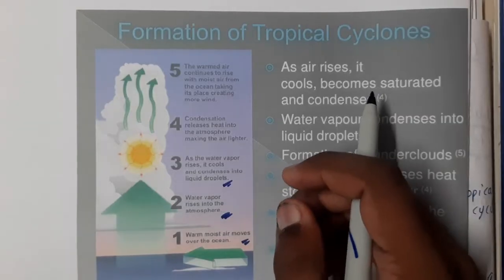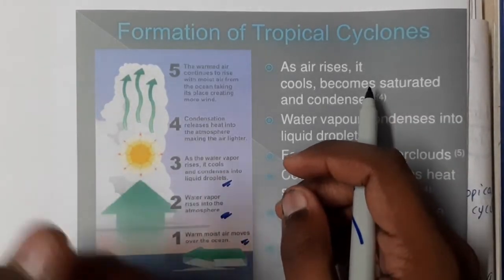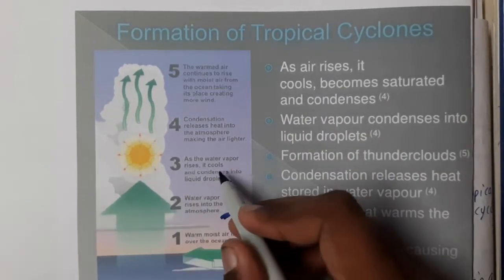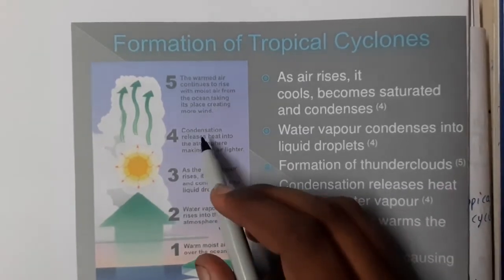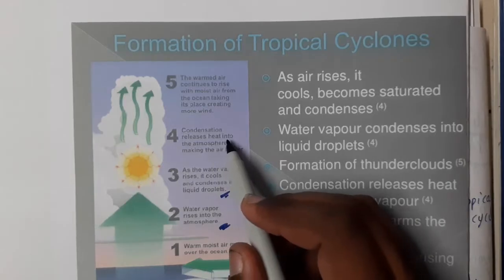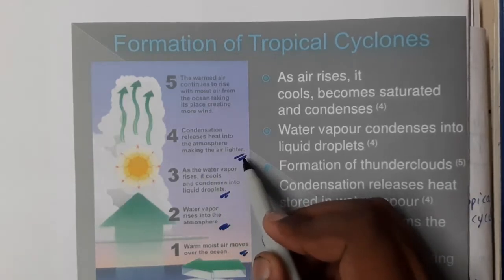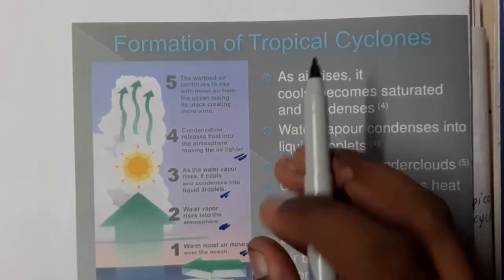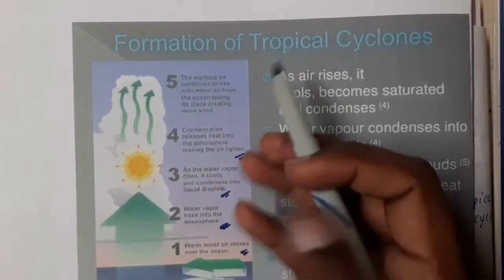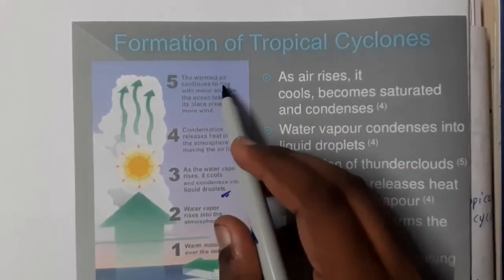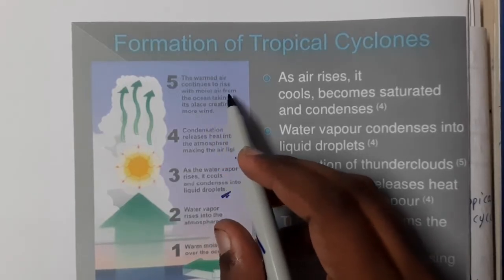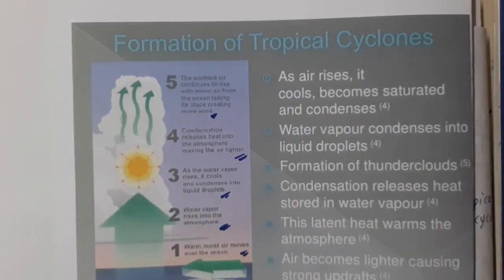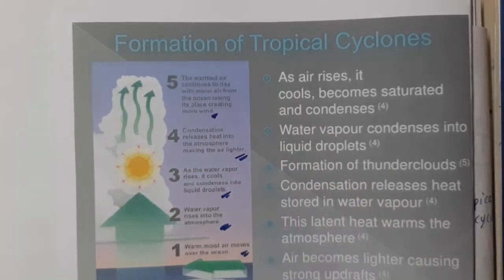We know how water is converted through evaporation and then the evaporated moisture is converted back into water through the water cycle. The vapor condenses into water molecules, and condensation releases heat into the atmosphere making the air lighter. The warm air continues to rise with moisture from the ocean, which causes winds that slowly form into cyclones.